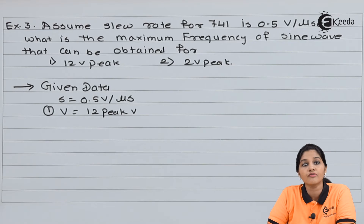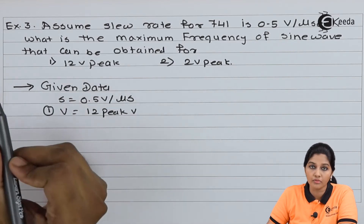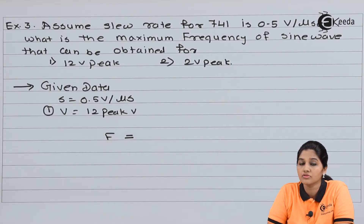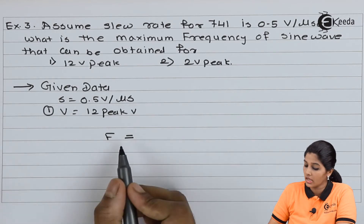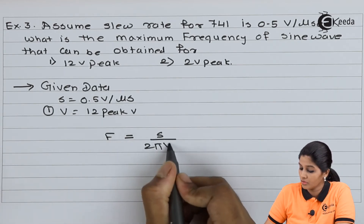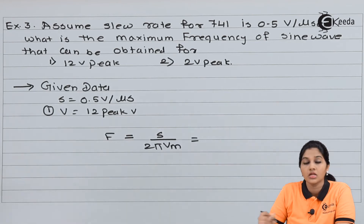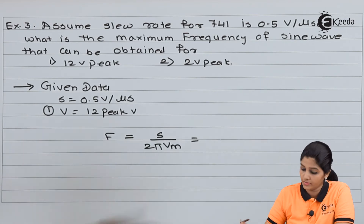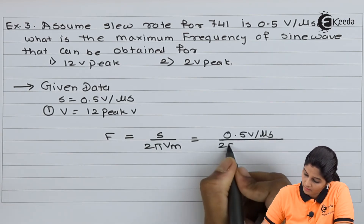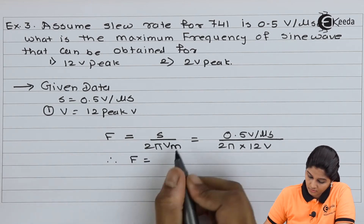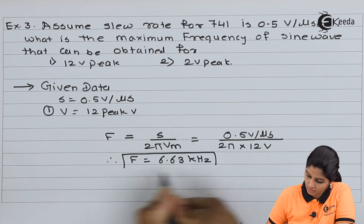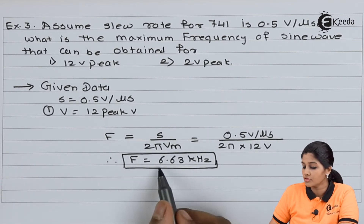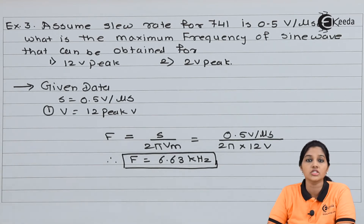First we consider voltage equals to 12 volt peak. The frequency of operation of op-amp can be calculated using slew rate. The formula for frequency is F equals S upon 2π into Vm. The value of slew rate is 0.5 volt per microsecond and Vm is 12 volt. When we solve the equation we obtain F equals 6.63 kilohertz for voltage equals to 12 volt.